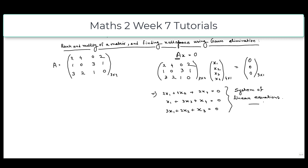For a homogeneous system of linear equations, we always know that 0 is a solution. But we have to find if there are any other solutions. In Gauss elimination, we transform matrix A into row echelon form or reduced row echelon form using row operations.